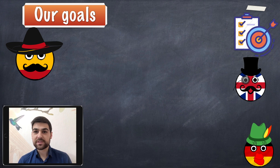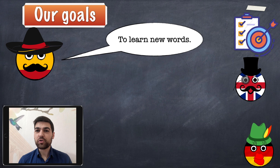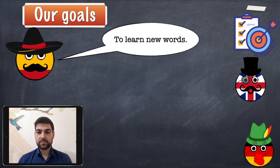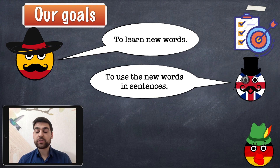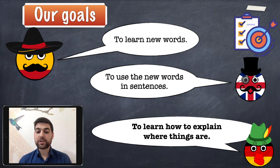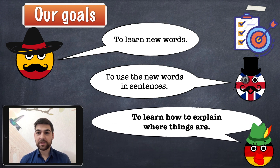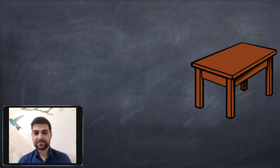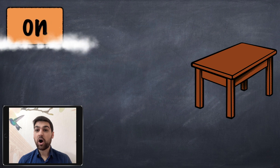The goals of this lesson: to learn new words, to use the words in sentences, and to learn how to explain where things are. Are you ready? Let's start. Our first word is 'on.'